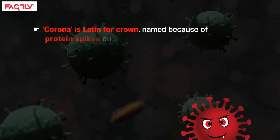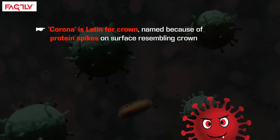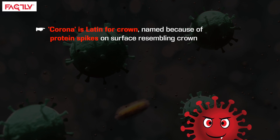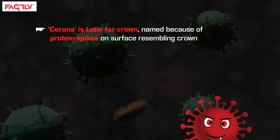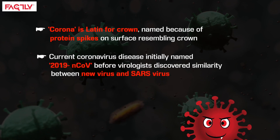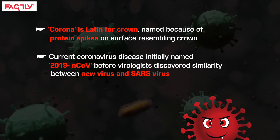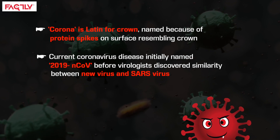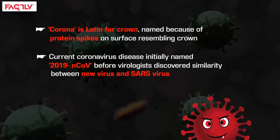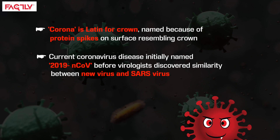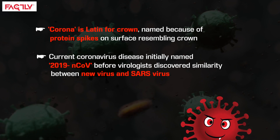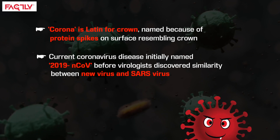Corona is the Latin word for crown, named because of protein spikes on its surface that resemble a crown. The current coronavirus disease was initially named 2019-nCoV, before virologists discovered the similarity between the new virus and the SARS virus.